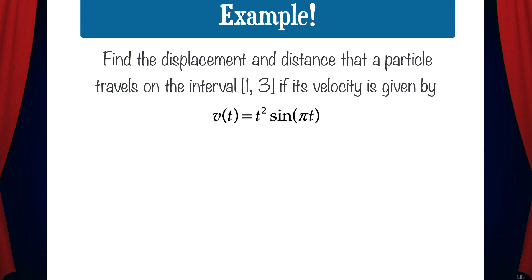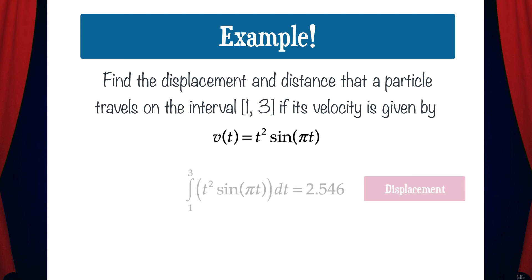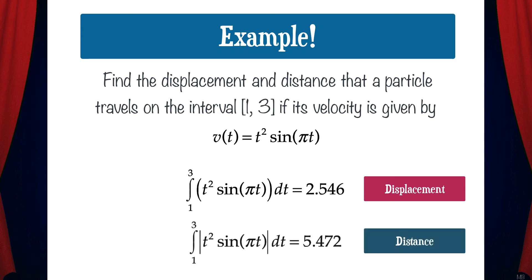Let's do an example problem. Find the displacement and distance that a particle travels on the interval [1, 3] if its velocity is given by v of t equals t squared sine of pi t. To find the displacement, we'll find the integral from 1 to 3 of t squared sine of pi t dt, and that gives us 2.546. To find the distance, we'll find the integral from 1 to 3 of the absolute value of t squared sine of pi t dt, and that gives us 5.472.